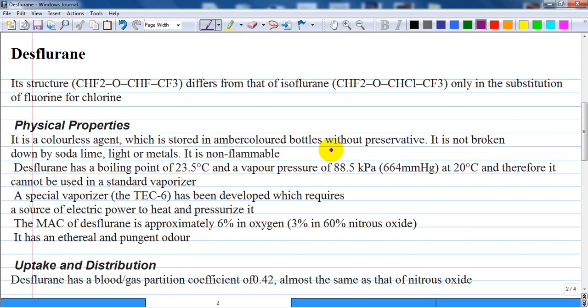Desflurane has a boiling point of 22.5°C and a vapor pressure of 88.5 kPa at 20°C, and therefore it cannot be used in a standard vaporizer. It can be used in a special vaporizer called TEC-6 that has been developed...